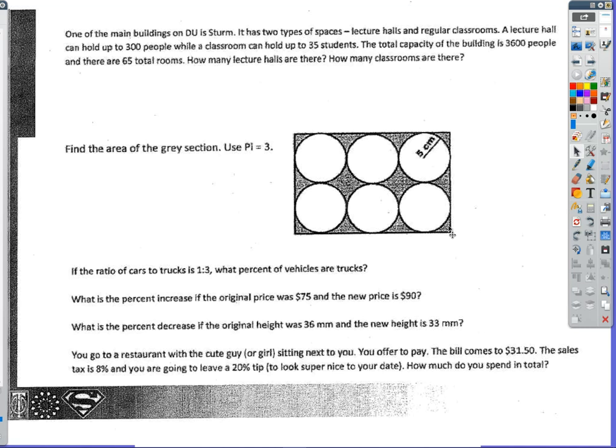Next problem. Find the area of the gray section and use 3 for pi. So I know that this radius is 5, because it says right here. Well, that means that this distance here is also 5, and this distance here is 5, and this distance here is 5. So this total distance is 20. Using the same logic, the diameter being 10 for each, I know that this distance here has to be 30.